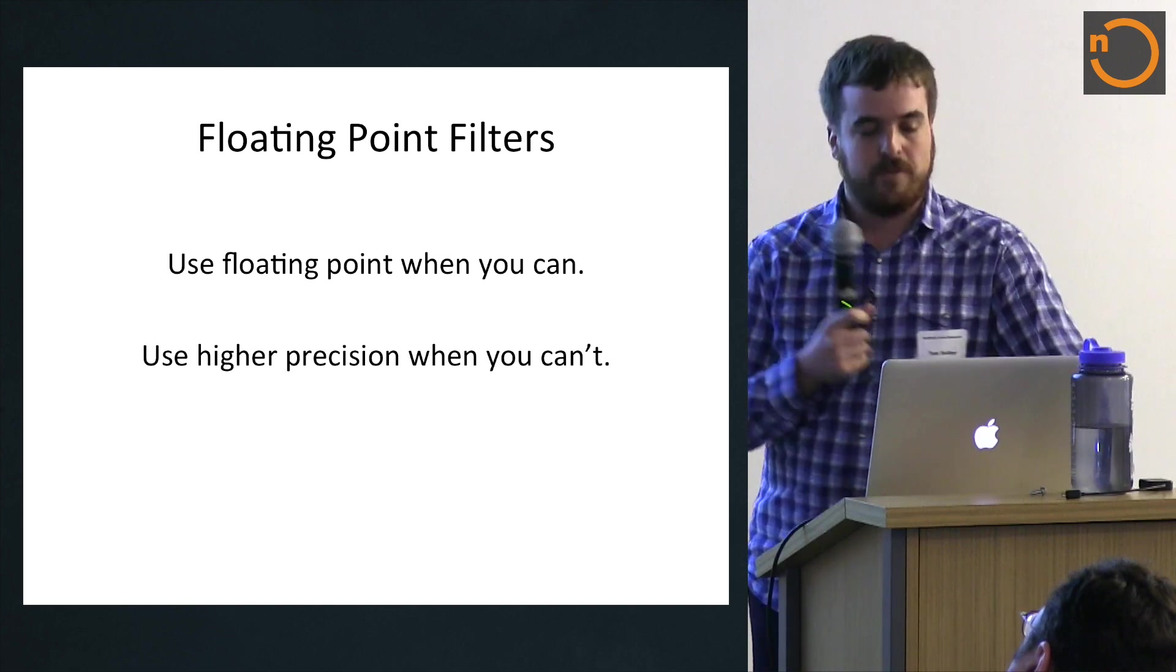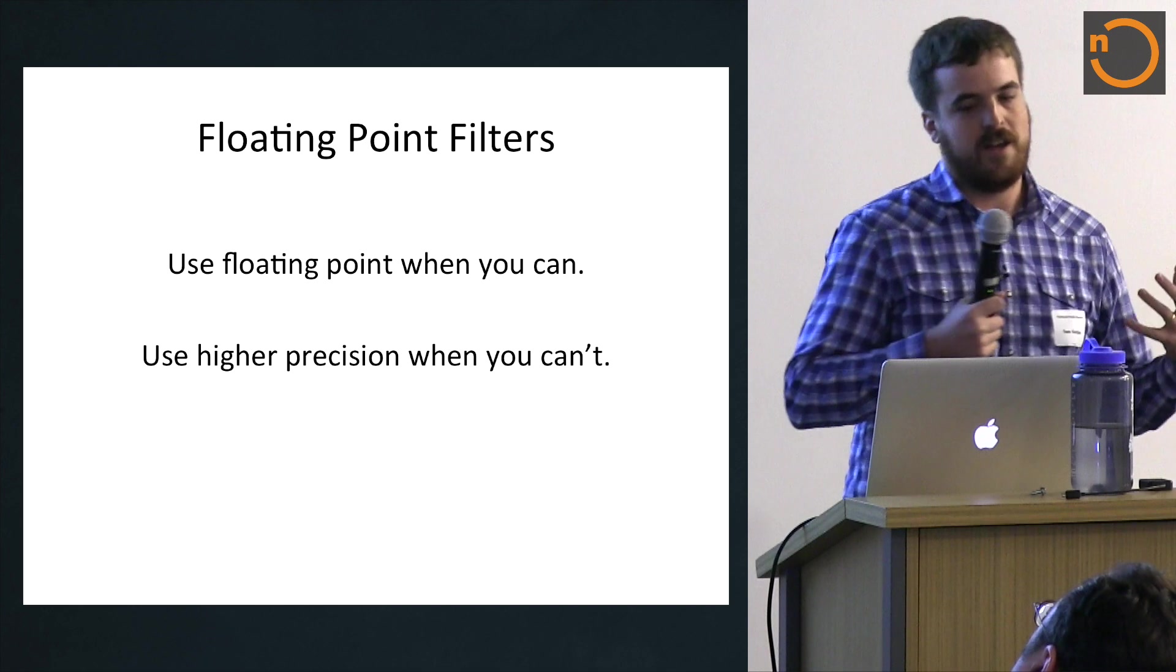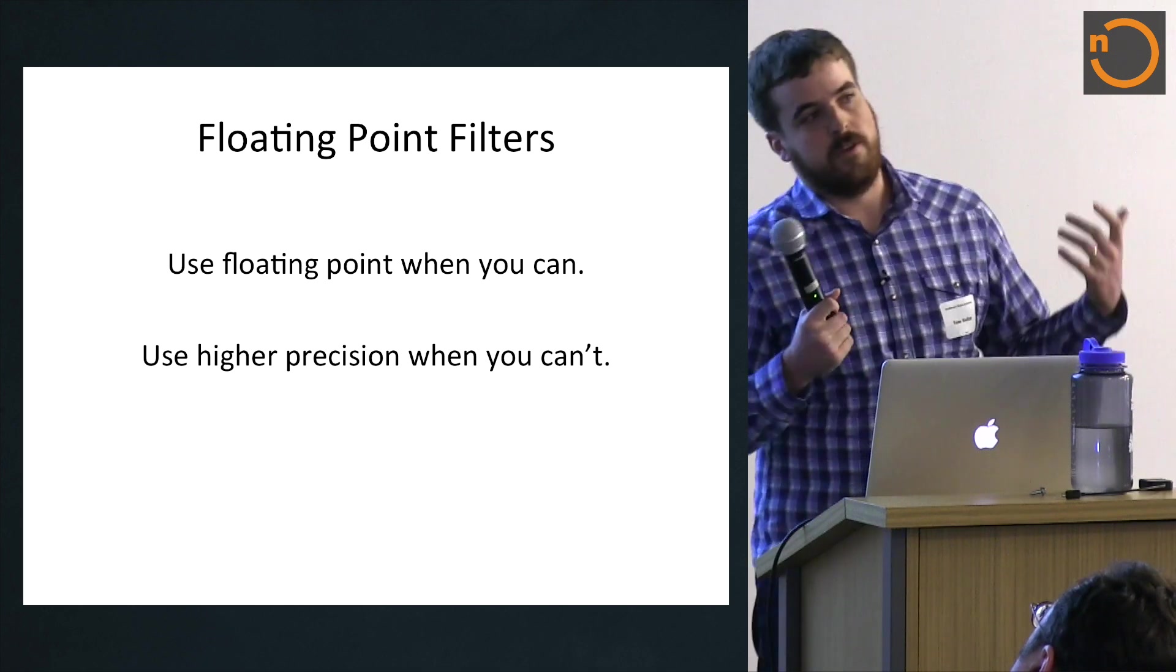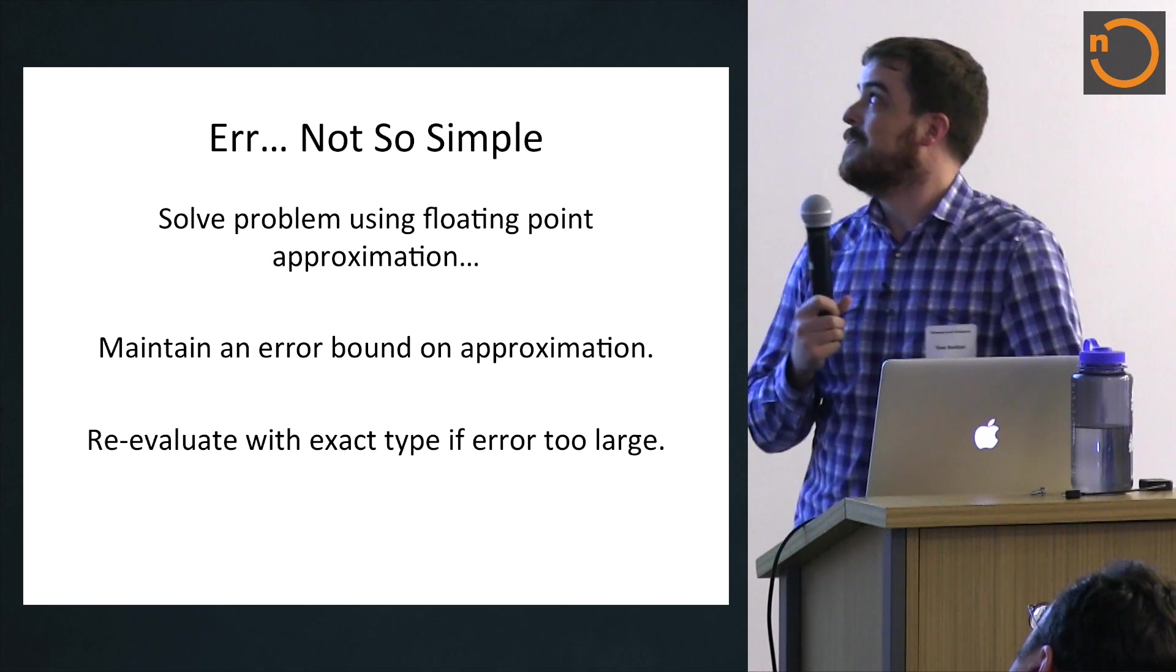The idea behind a floating point filter is pretty straightforward. Basically, you use a floating point approximation when you can, so you use double as long as you can. And when you can't use double, you don't. You use higher precision types. Makes sense, right? Of course, the devil is in the details.